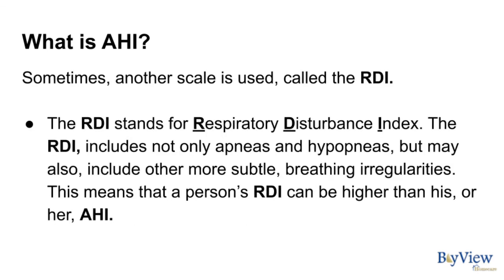Sometimes another scale is used called the RDI. The RDI stands for Respiratory Disturbance Index. The RDI includes not only apneas and hypopneas but may also include other more subtle breathing irregularities. This means that a person's RDI can be higher than his or her AHI.